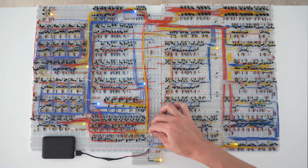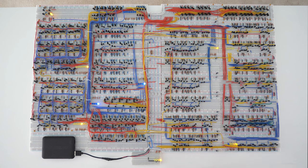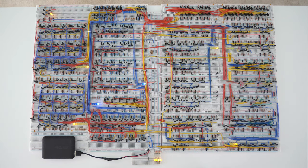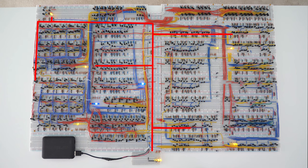Now let's talk about how each section of the computer is built. We will start with the clock. The clock is an astable multivibrator, which is connected to the ring counter and data bus. Via the data bus, the clock also connects to these other circuits.